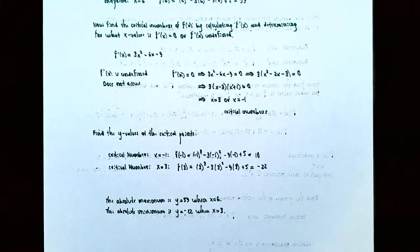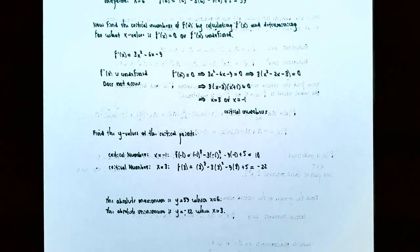To summarize: to find the absolute maximum and minimum on a closed interval, check y values at the endpoints and at all critical numbers, then compare them all. We've covered finding absolute extrema using tables, graphs, and the Extreme Value Theorem on a closed interval. If you have any questions about the examples or the homework for this section, please let me know. See you in the next video when we talk about finding the absolute maximum and minimum on an open interval.